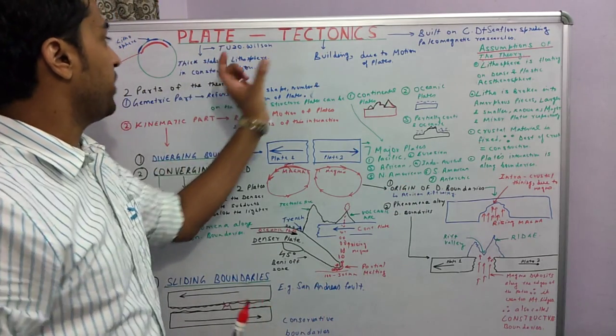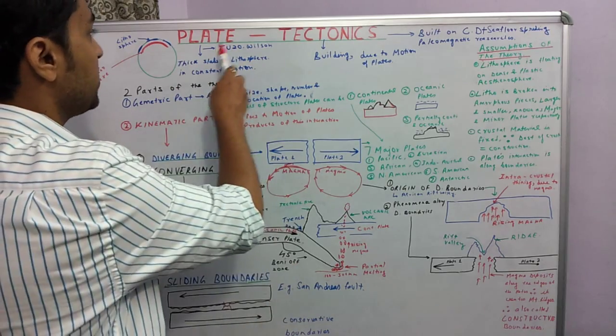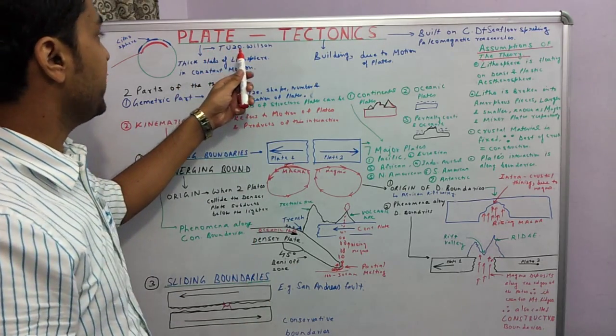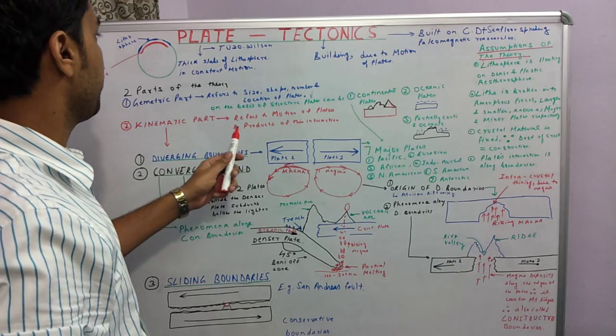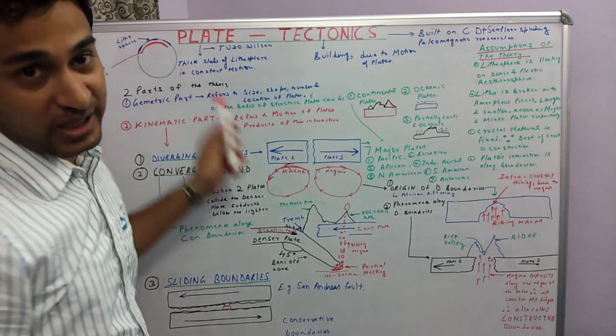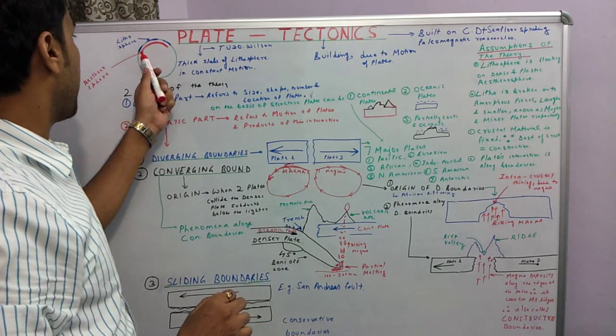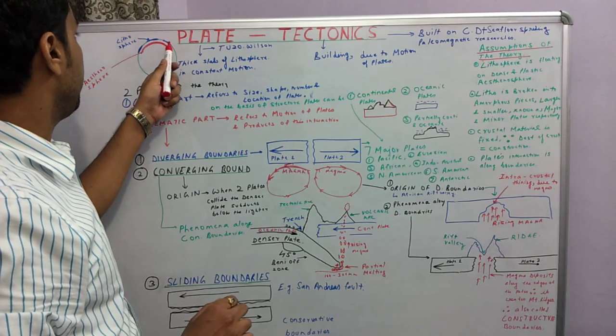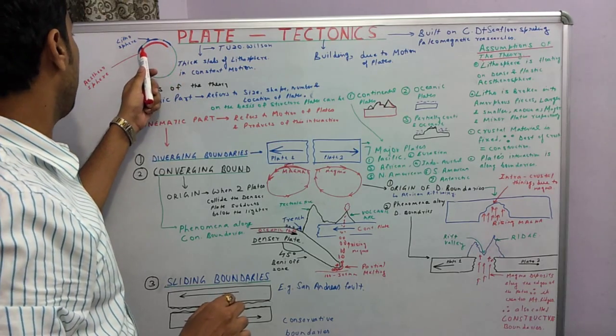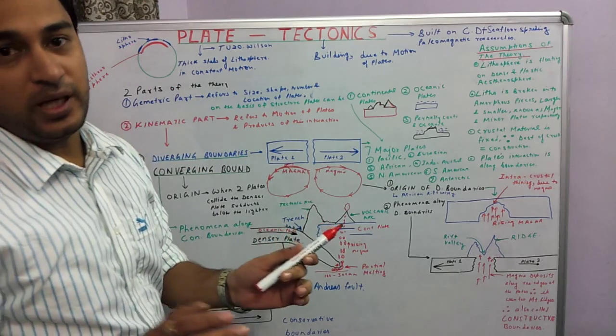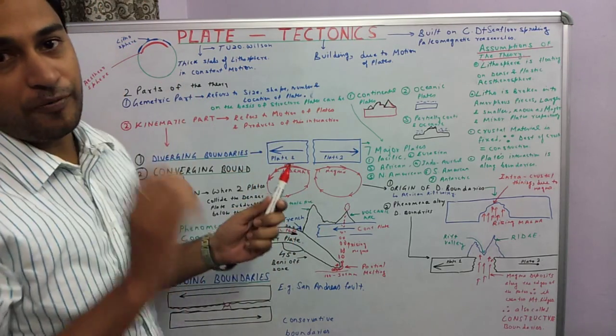Now the word plate tectonics is made up of two words: plate and tectonics. The word plate was given by a Canadian geophysicist Tuzo Wilson. Plates are nothing but simply thick pieces of lithosphere. We can see in this diagram that these lithospheric pieces are above the plastic asthenosphere. Lithosphere is simply the crust and some bit of upper mantle.